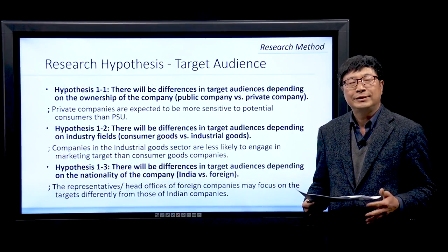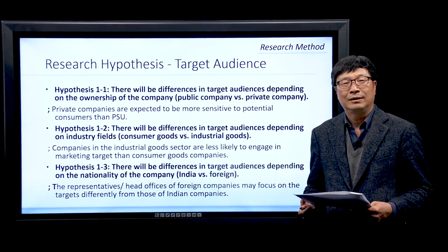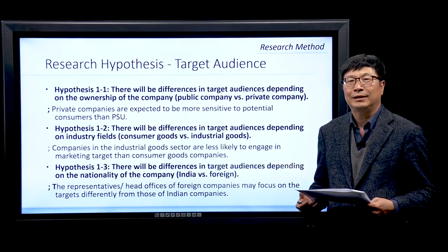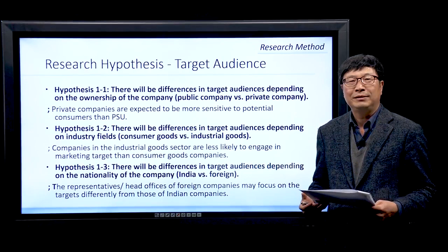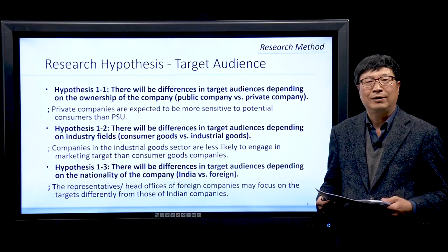To research social marketing, we proposed two sections of hypotheses. The first section is about target audience. The first hypothesis is that there will be differences in target audience depending on the ownership of the companies. Private companies are expected to be more sensitive to potential customers than public sector units.